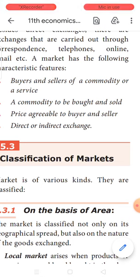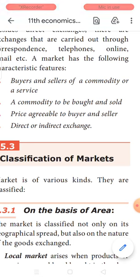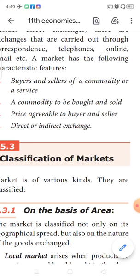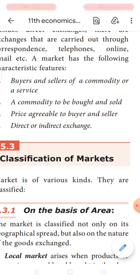The last characteristic is direct or indirect exchange — the commodity could be directly exchanged, or it could be exchanged indirectly without the buyer and seller meeting each other, as happens in modern markets, or through some middlemen. So these four are the characteristic features of a market, which is a two-mark question.